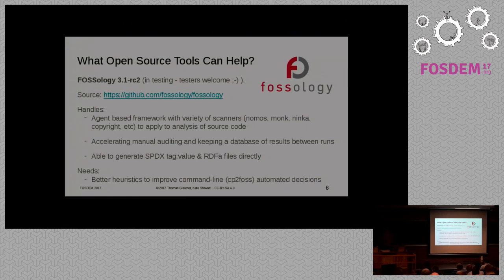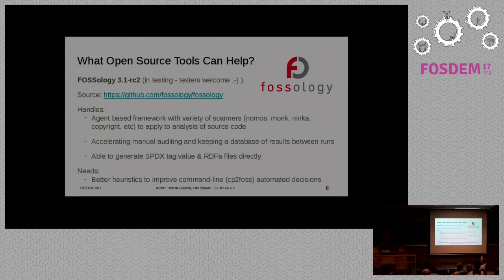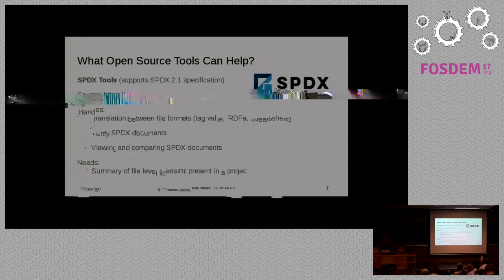Fossology provides an interactive interface that lets you recognize things, assign licenses, and effectively go through a clearing process. It makes it easier to manually look at a project and generate output so you have confidence you can ship it and you know what the licenses are. With the 3.1 version, it's now able to generate tag-value output so you can get a file license list. However, it does need better heuristics for the command-line side — the command-line interface needs to better automate the decisions that are going on.